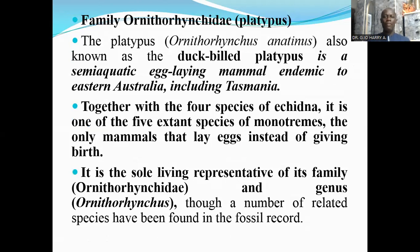In the order Monotremata, we have two families containing the platypus and the echidna. The platypus belongs to the family Ornithorhynchidae. The platypus, also known as the duck-billed platypus, is a semi-aquatic egg-laying mammal endemic to eastern Australia, including Tasmania.